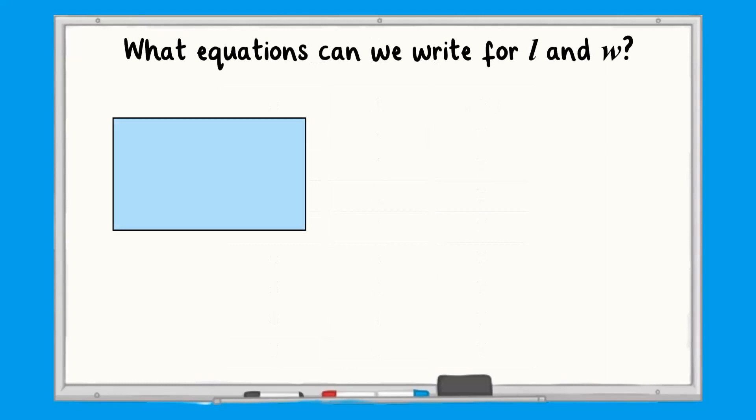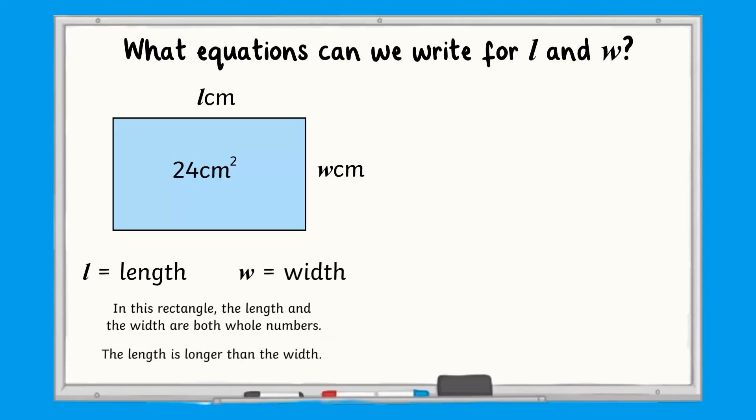Sometimes we might have more than one equation to satisfy. For example, this rectangle has length l centimeters and width w centimeters. L and w are both a whole number of centimeters. The area of the triangle is 24 centimeters squared. The length is longer than the width.